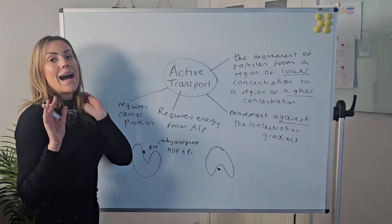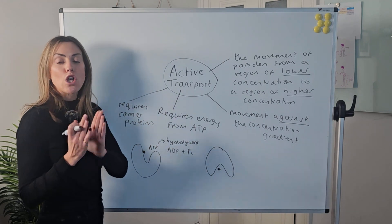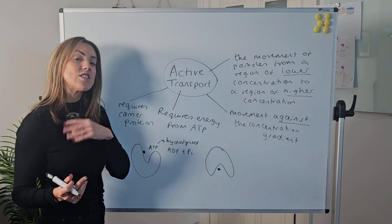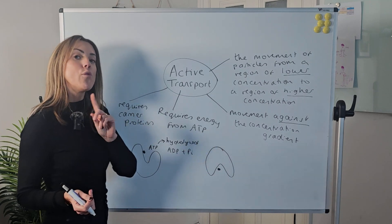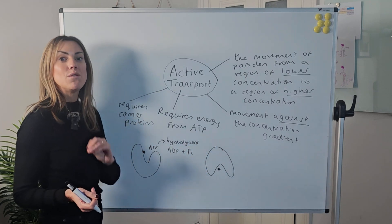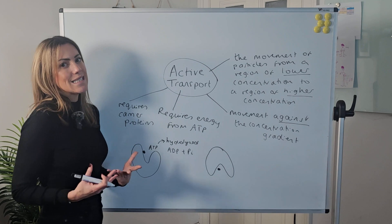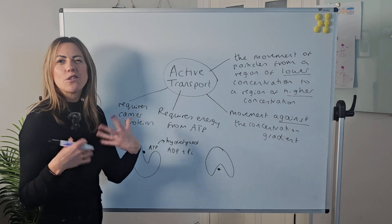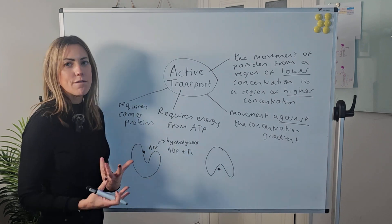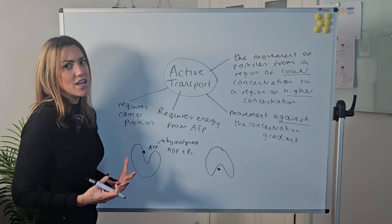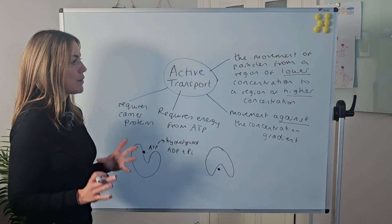Remember, active transport only uses carrier proteins — it's not like facilitated diffusion, which can also use a channel protein. Facilitated diffusion is also passive, so it does not require energy from ATP.